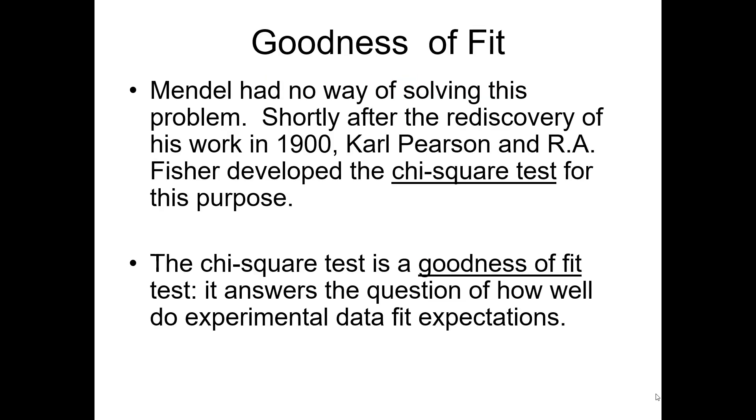Mendel had really no way of solving that problem when he first came up with the laws of genetics. But shortly after his work was rediscovered in 1900, a couple of different mathematicians developed the chi-square test for these kinds of tests. A chi-square test is a goodness of fit test. There are several others, but this is one type of test that's used for genetic work all the time. And it's designed to answer the question of how well do my experimental data fit the expectations that I had.